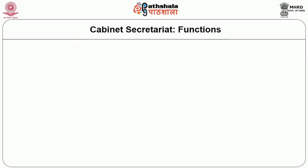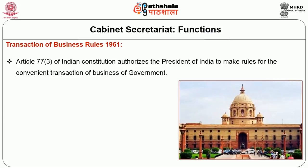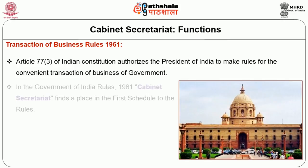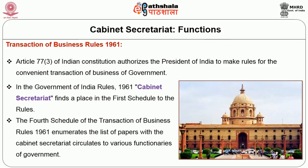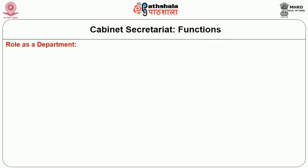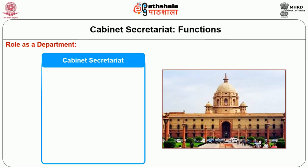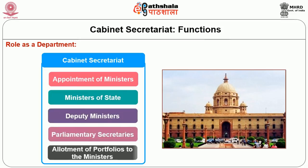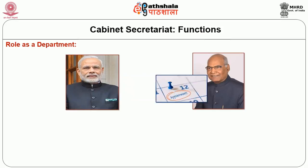Transaction of Business Rules 1961: Article 77, clause 3 of the Indian constitution authorizes the president of India to make rules for the convenient transaction of business of the government. In the Government of India Allocation of Business Rules 1961, the cabinet secretariat finds a place in the first schedule of the rules. The fourth schedule of the Transaction of Business Rules 1961 enumerates the list of papers which the cabinet secretariat circulates to various functionaries of the government. As a department, the cabinet secretariat originates various kinds of proposals which pertain to the appointment of ministers, ministers of state, deputy ministers and parliamentary secretaries, besides the allotment of portfolios to the ministers.